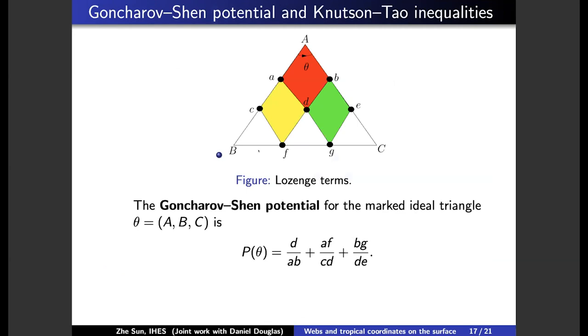So, how to describe these inequalities? We can use this rhombus drawing inside each triangle, and we can put a polynomial with respect to this rhombus. And then, we can obtain the coalescent tau inequalities by taking the tropicalization of this function.